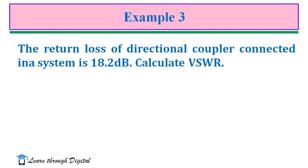In the third example, the return loss of a directional coupler connected in a system is 18.2 dB. Calculate the VSWR. Here, return loss is given and we have to find the VSWR. Return loss is related to the reflection coefficient, and VSWR can be written in terms of the reflection coefficient. In this way, we find the value of VSWR.